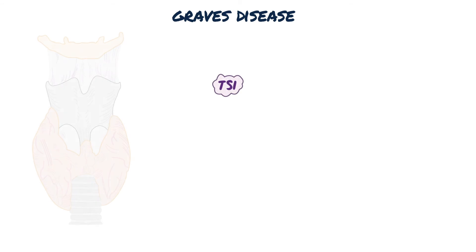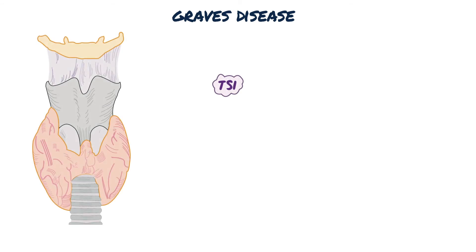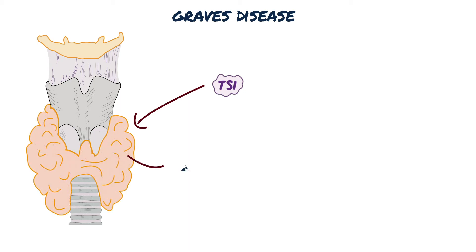Thyroid-stimulating immunoglobulins target and activate the TSH receptor, causing goiter — the term used to describe an enlarged thyroid — because of the hypertrophy and hyperplasia of the gland.